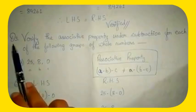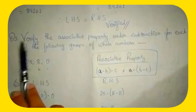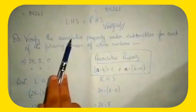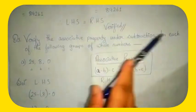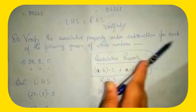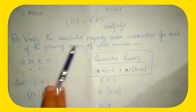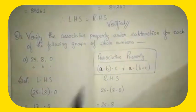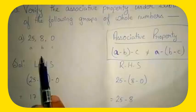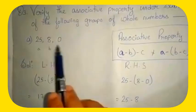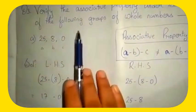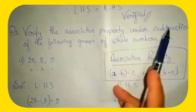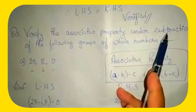Now let us move to question number 3: verify the associative property under subtraction for each of the following groups of whole numbers. In this question you have to verify the associative property under subtraction method.